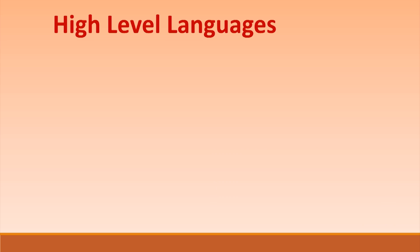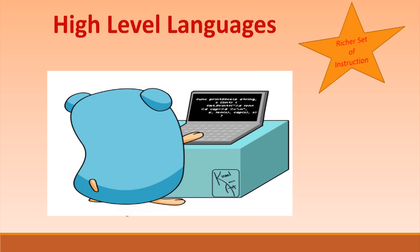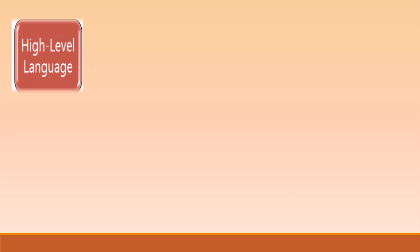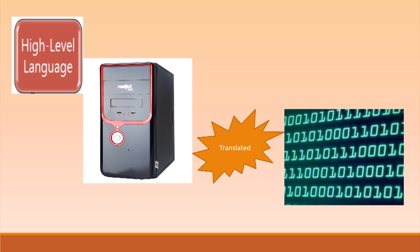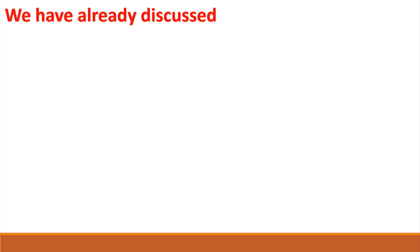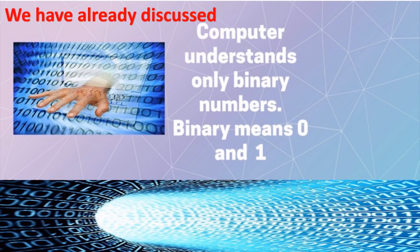High-level languages provide a richer set of instructions and support, making the programmer's life even easier. Yet, before a high-level program can be executed on a given CPU, it must be translated back to machine code. As we have already discussed in earlier videos, computers understand only binary language — a language of zeros and ones — where each word in human language is written as a binary code in machine language.